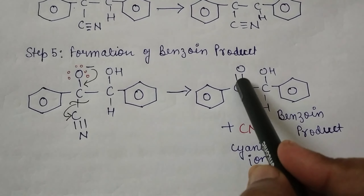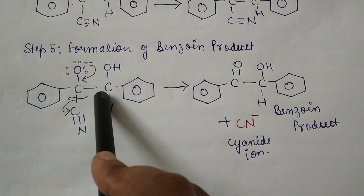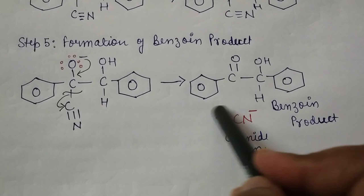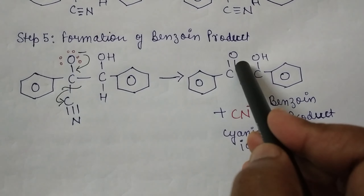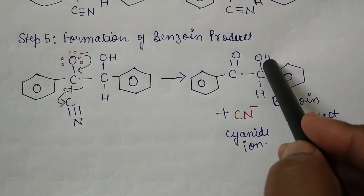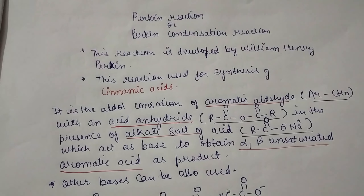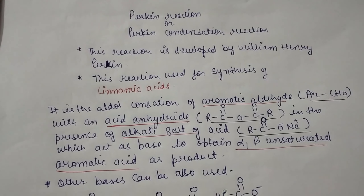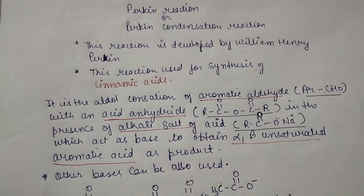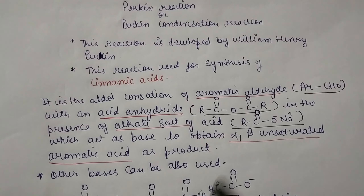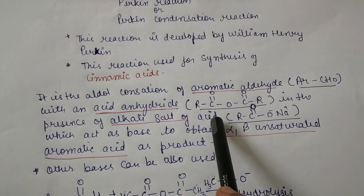In step 5, benzoin product is formed. There is a rearrangement of electrons: the negatively charged oxygen has an extra pair of electrons that move to the bond between carbon and oxygen, converting it into a double bond — a carbonyl carbon. Because the double bond forms and carbon has a valency of four, the cyanide ion is liberated. This gives us our benzoin product, where the negatively charged oxygen becomes the carbonyl carbon and the OH group remains. The cyanide ion is released as a catalyst.